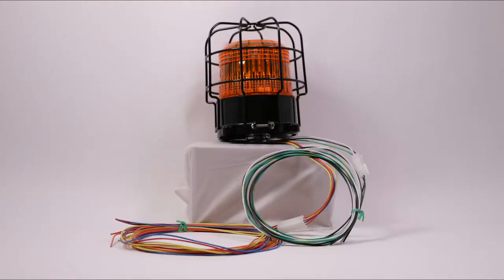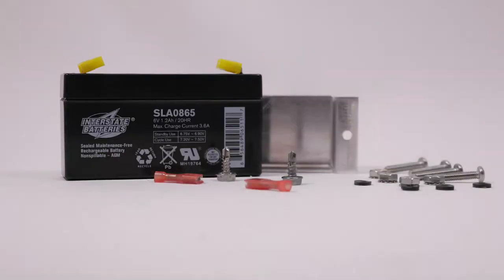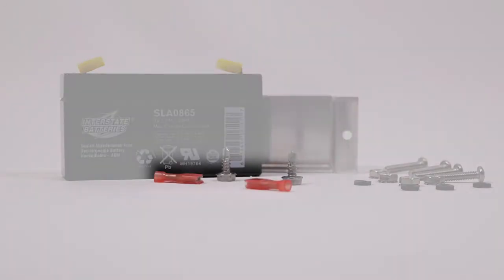You will also find the OmniBeacon with its wiring harness and impact guard cage, and the accessory bag, which includes the 6-volt backup battery, the battery bracket, two quick-connect terminals, four stainless bolts with matching nuts and neoprene washers, and two self-tapping screws.